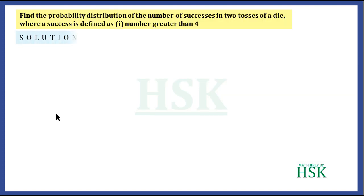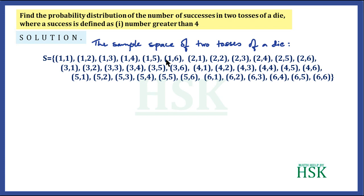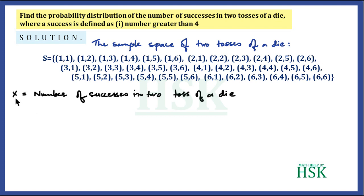The sample space of the two tosses of a die can be written out, though we are not going to spend time explaining how it is obtained as it is straightforward. We consider X as the number of successes in two tosses of a die. Then X can take values 0, 1, or 2, because a number greater than four obtained on a throw of a die is a success.